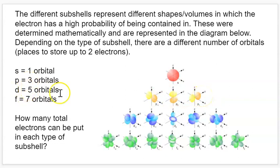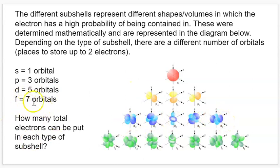An S subshell can hold two electrons because there's only one orbital. P subshells, which have three orbitals, can hold six electrons. For D, it'll be five times two — so 10 total electrons. And for F, since there are seven orbitals, that'll be 14 total electrons that can fit in that subshell.